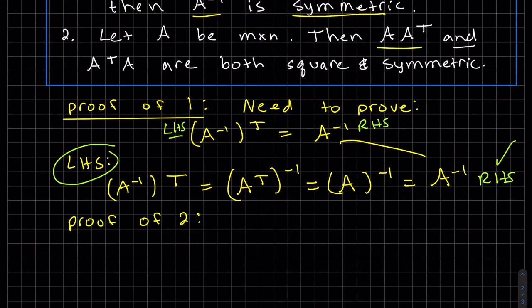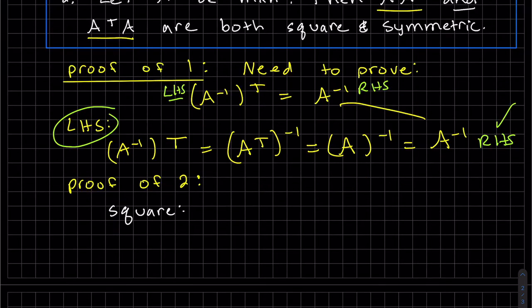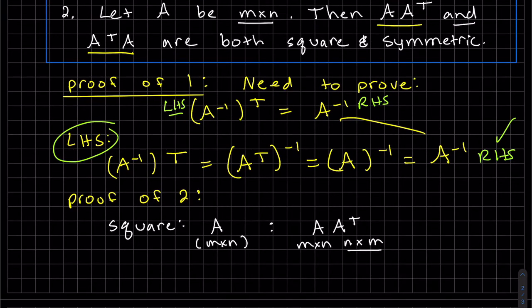I'm only going to prove this one. It's very similar going this way. You can practice it at home. So there's two things we need to prove. Let's work on the first one. So they're square and they're symmetric. That's given. So transpose means that it swaps. And these are the same. And they're the same. So we get M by M. So that's a square matrix.